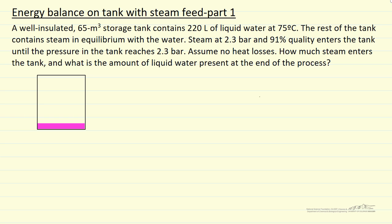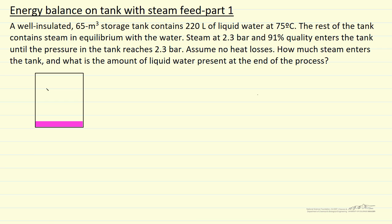In this problem we have a storage tank. We're given the volume — it contains 220 liters of liquid water, so almost the entire volume is vapor, starting at 75 degrees. There's liquid at the bottom but the actual fraction of volume that is liquid is much smaller than drawn. We have some mass of liquid and some mass of vapor at the start. Then we're going to add steam at a higher pressure and high quality, so mostly vapor by mass.